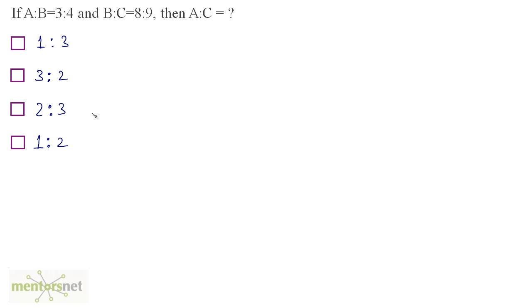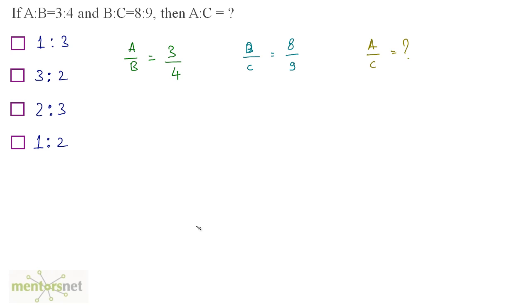Well, a is to b is equal to 3 is to 4, so a by b is equal to 3 by 4. And b by c is 8 by 9. What we want is a by c. Now, if I multiply a by b and b by c, I can get a by c.